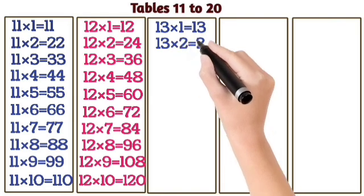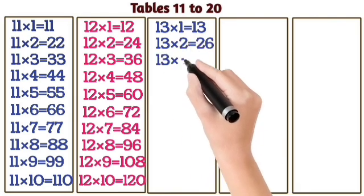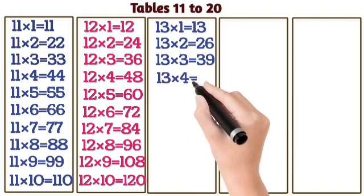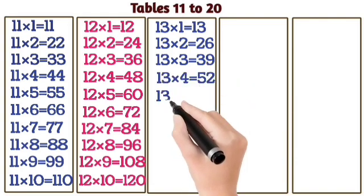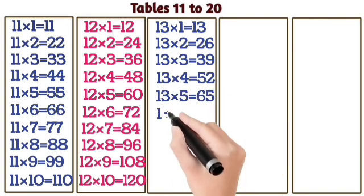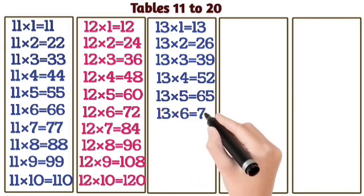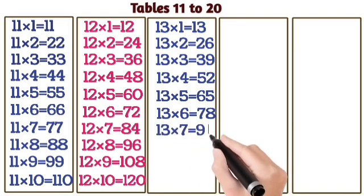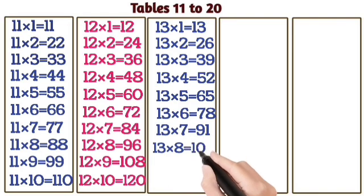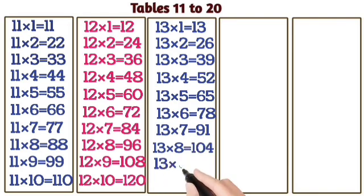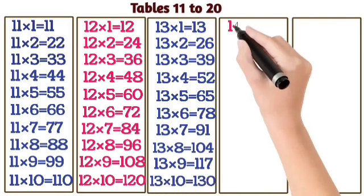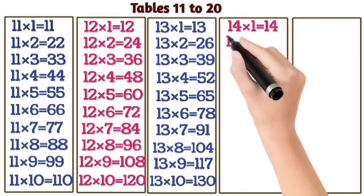13 ones are 13. 13 twos are 26. 13 threes are 39. 13 threes are 52. 13 fives are 65. 13 sixes are 78. 13 threes are 70. 13 eights are 104. 13 nines are 117. 13 threes are 130.